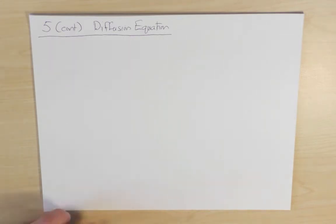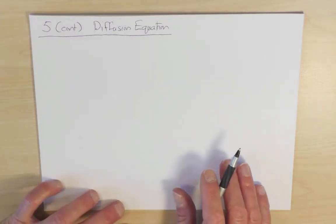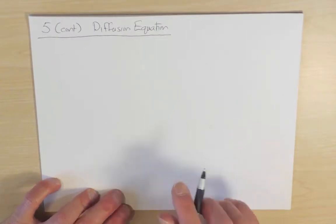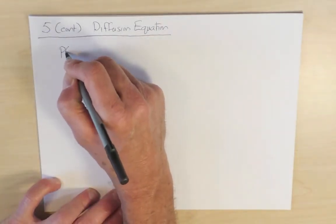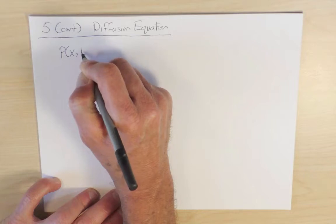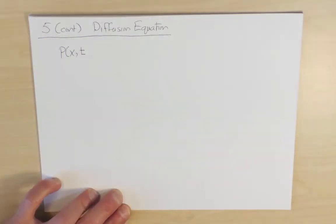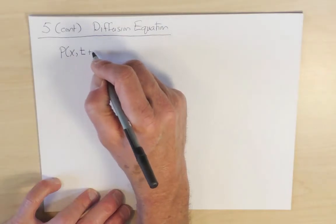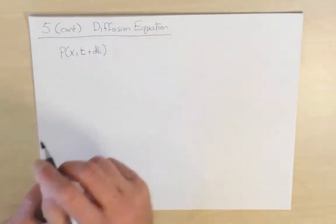I'm going to write it in a slightly different form that facilitates taking the continuum limit. So let's look at px, but instead of looking at a time t, let me look at a time t plus one. But instead of having one, we're going to write the time increment as dt, which will allow us to take the limit as dt goes to zero.